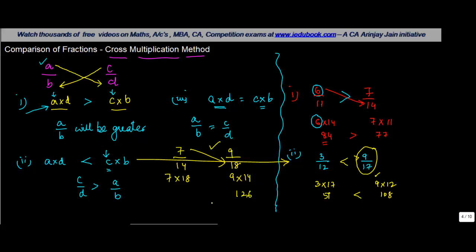This we know is 126, 18 into 7 will give you 70 plus 56, 126. In these cases, both the numbers are equal and hence we say 7 upon 14 is equal to 9 upon 18.